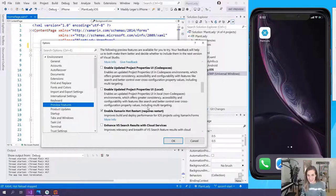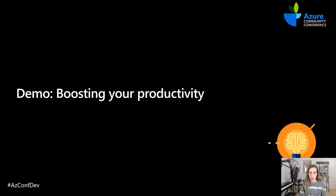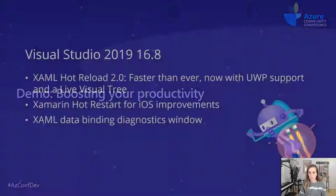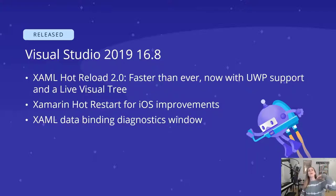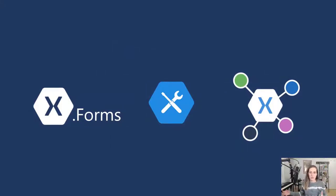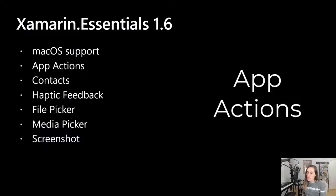We're not done with the app yet — we'll come back in the second demo for Xamarin Forms 5 features. On the SDK side, there's Xamarin Forms, Xamarin Essentials, and something new called the Xamarin Community Toolkit. Let's start with Xamarin Essentials 1.6. I was using the 1.6 preview in the app I just showed. It has support for new device functionality including app actions — shortcuts you can trigger without entering the app — file picker support with native Android and iOS pickers, media support, contacts, haptic feedback, and screenshotting.